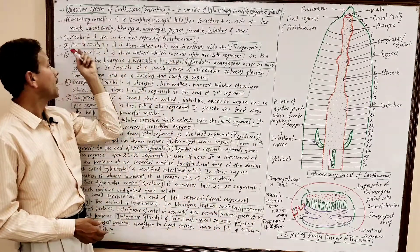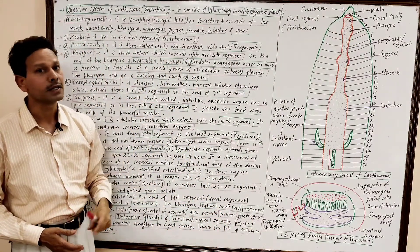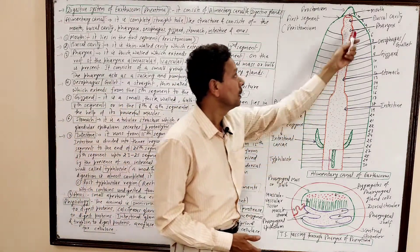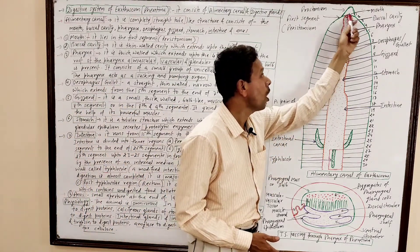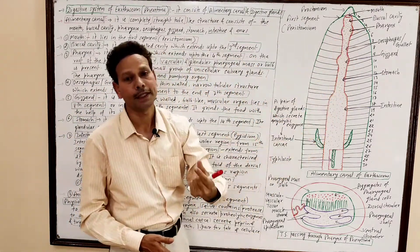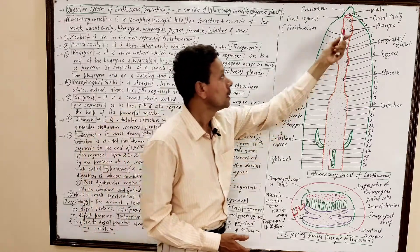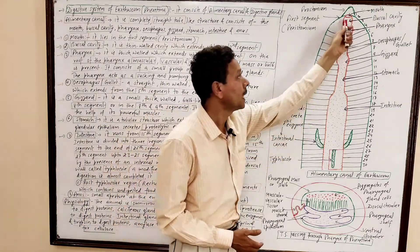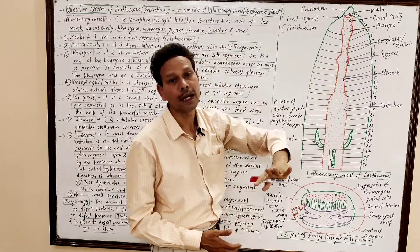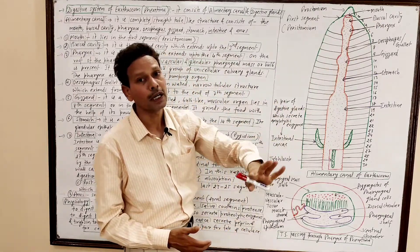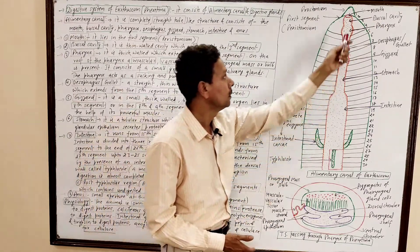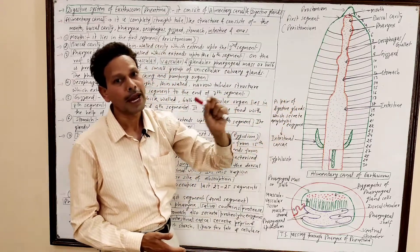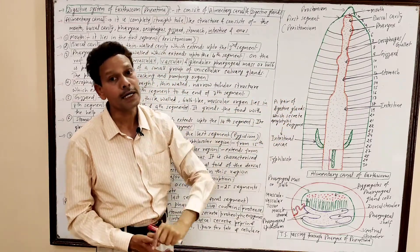The second part of the alimentary canal is the buccal cavity, which is a small thin void space or cavity. This buccal cavity extends up to the end of the third segment.